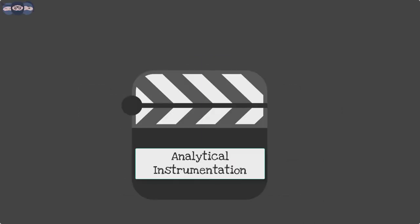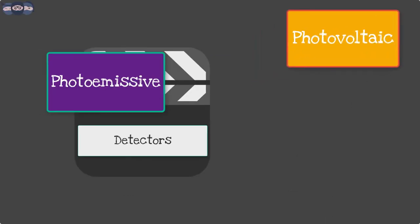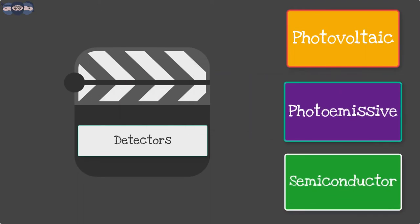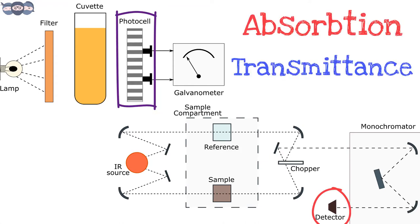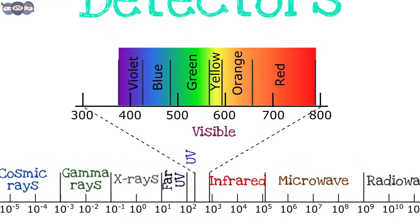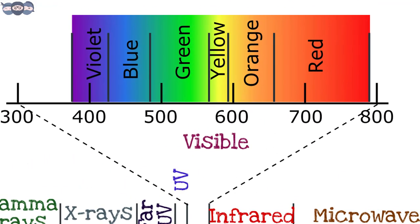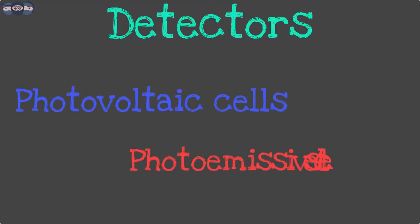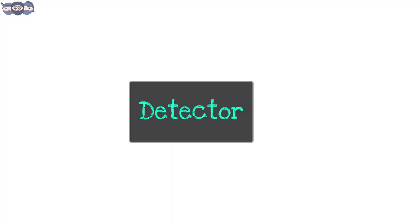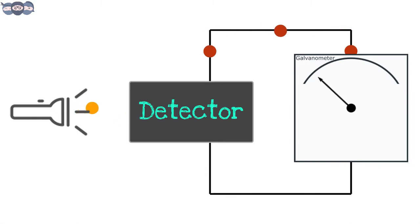In this video we will understand the different detectors used to measure the intensity of radiations. Analytical instruments employ these detectors to measure absorption or transmittance of radiation. The detectors in the UV-visible region of electromagnetic spectrum can be separated as photovoltaic cells or photoemissive cells. These detectors convert the light energy falling on them into electrical energy.